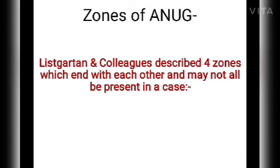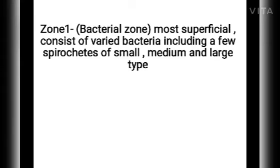Regarding zones of ANUG, Listgarten and colleagues described four zones which are contiguous with one another. The first zone is the bacterial zone, which is the most superficial and consists of bacteria including a few spirochetes of small, medium, or large types. The second zone is the neutrophil-rich zone, which contains numerous leukocytes, predominantly neutrophils, and may also contain bacteria.